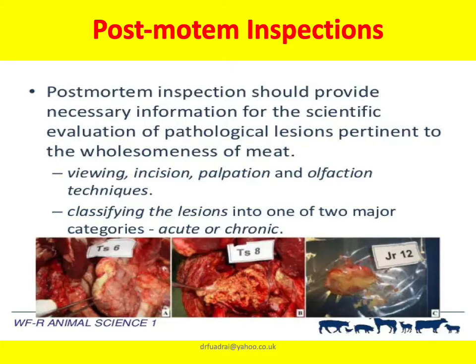In the post-mortem inspection, it should provide necessary information for the scientific evaluation of pathological lesions pertinent to the wholesomeness of the meat. The different steps involved are viewing, incision, palpation, and olfaction. These have been translated into special techniques, and veterinarians trained for inspections are well versed with these techniques. They then classify the lesions into one of the two major categories — acute or chronic — and this is how it is ascertained whether the meat is fit for human consumption or not.